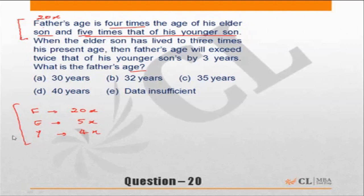If instead you let the younger son be x, the father be 5x, and the elder son becomes 1.25x, you end up with decimals and your calculation becomes difficult. It is always advantageous to write it this way. Since the father's age is four times the elder and five times the younger, the LCM of four and five is twenty. Let the father's age be 20x, and similarly derive the ages of the elder and younger son. These are the current ages.